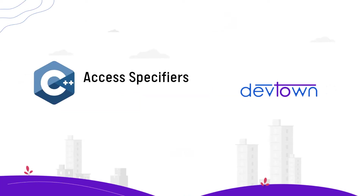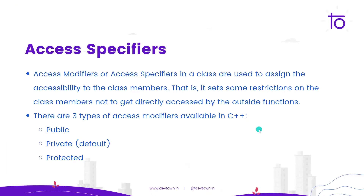Hello everyone. In this video we are going to talk about access specifiers. Access specifiers or access modifiers in a class are used to assign the accessibility of the class members — that is, it sets some restrictions on the class members not to get directly accessed by outside functions.